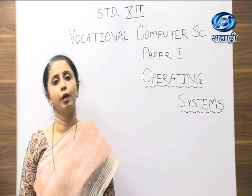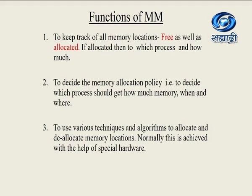So let us move on to memory management. The very first function is to keep track of all memory locations — that is the primary memory locations — whether they are free or allocated. If they are allocated, then to which process and how much. The next function is to decide the memory allocation policy, that is to decide which process should get how much memory, when and where. The third function is to use various techniques and algorithms to allocate and de-allocate memory locations, normally achieved with special hardware.